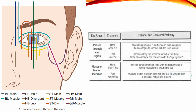The channels that pass through the eye region are: hand jue yin — the ascending portion of the heart system runs alongside the esophagus to connect with the eye system. Foot jue yin ascends along the posterior aspect of the throat to the nasopharynx and connects with the eye system. Regarding the musculotendon meridians, hand shao yang and foot yang ming musculotendon meridians each join with the foot tai yang to form a muscular net around the eye.